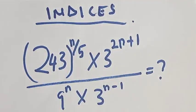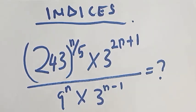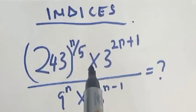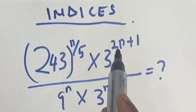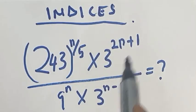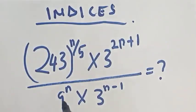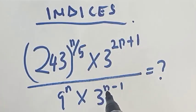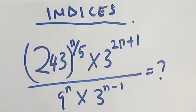Hi everyone, welcome to my class. In today's class we want to look at how to solve these indices: 243 raised to power n over 5, times 3 raised to power 2n plus 1, all over 9 raised to power n times 3 raised to power n minus 1. We want to look at how to solve this question in the easiest way.